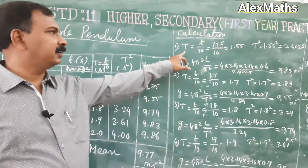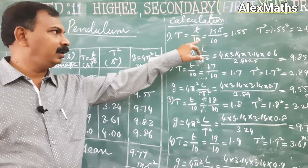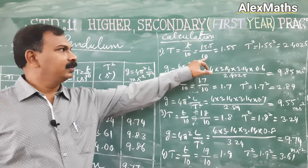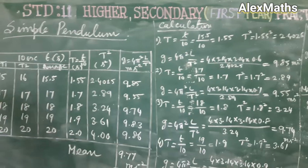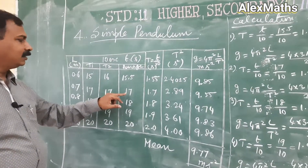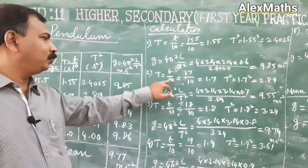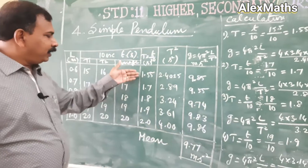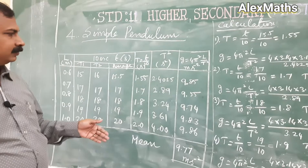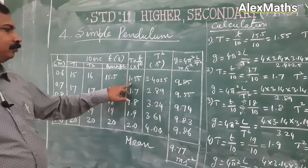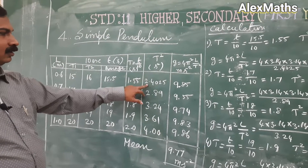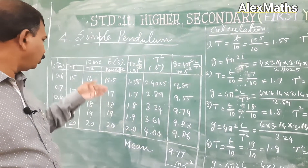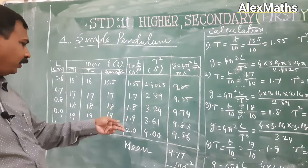Capital T (time period) equals small t (time for 10 oscillations) divided by 10. For length 0.6 m, we get an average time of 15.5, so T = 15.5 / 10 = 1.55 seconds. For 0.7 m, the average time is 17, so T = 17 / 10 = 1.7 seconds. Find the time period for all lengths and then square it to get T². For example, 1.55² = 2.4025. Find T² for lengths 0.6, 0.7, 0.8, 0.9, and 1.0 meter.